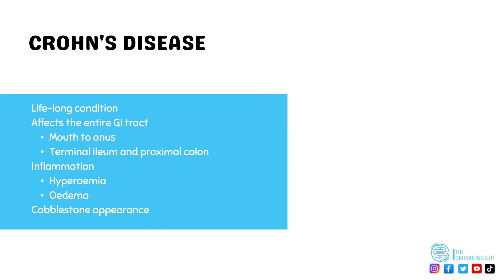So let's have a look at what Crohn's disease is. Crohn's disease is a lifelong condition where parts of the digestive system become inflamed. It is commonly referred to as Crohn's and can affect any part of the digestive system, but it most commonly affects the terminal ileum and the proximal colon.